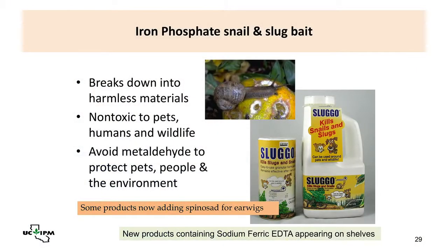It's important to note that metaldehyde, which was the primary slug bait for home gardens for a long time, is very toxic to dogs, birds, and people — avoid those products. Iron phosphate is much safer and just as effective. There are also some newer products with ferric EDTA appearing on shelves — their effectiveness is uncertain, and they are not organically acceptable. Iron phosphate is organically acceptable.